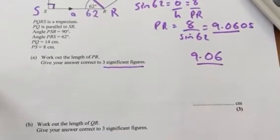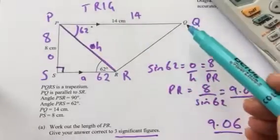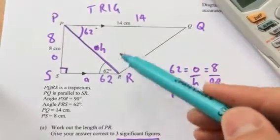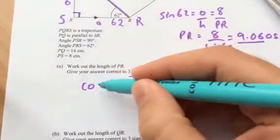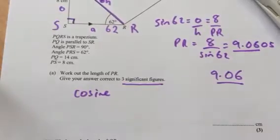The next question asks us to work out the length of QR. Now QR is this line here. So we have an included angle and the two sides. It's going to be using the cosine rule.